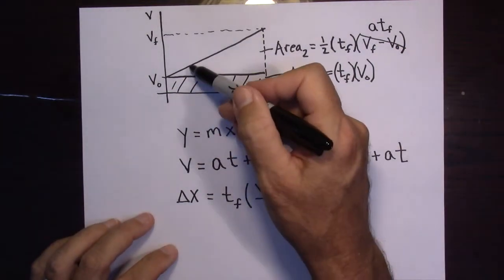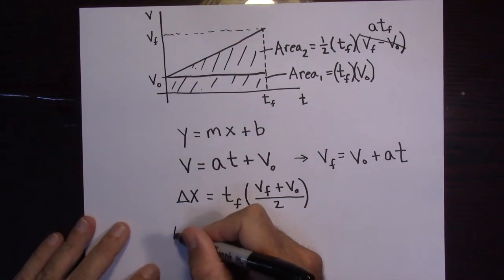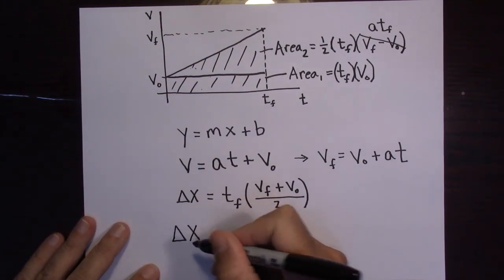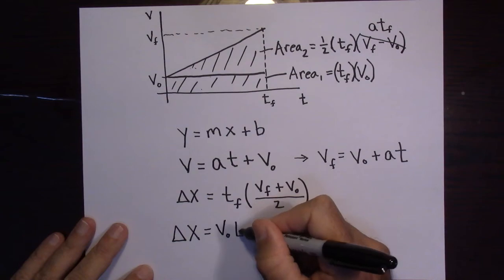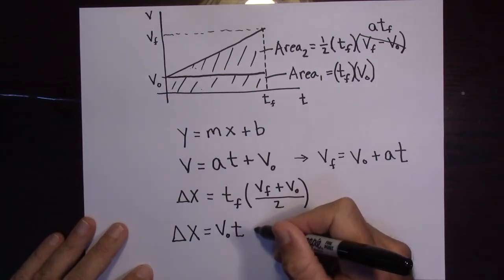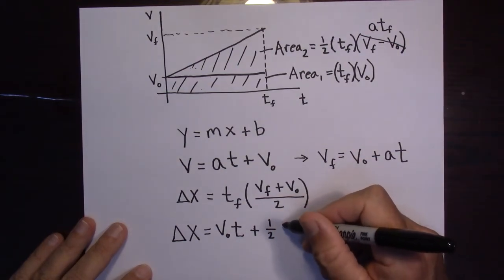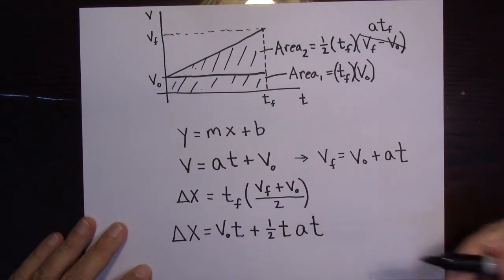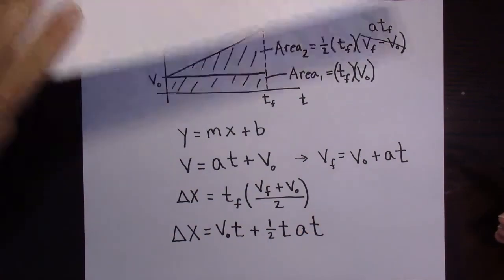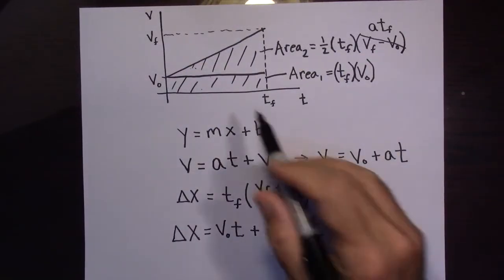The total displacement is the two areas added together: delta X equals V_initial times T, plus one half T times AT. That T times AT becomes AT squared, so we get delta X equals V_initial·T plus one half·A·T squared. That's the third kinematics equation derived using the two areas.